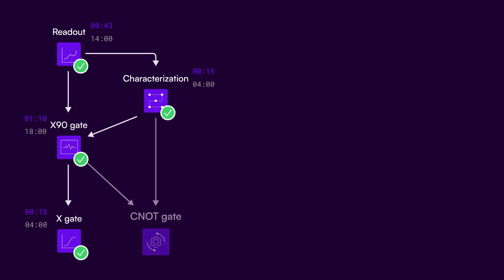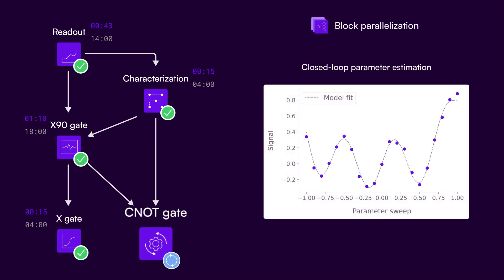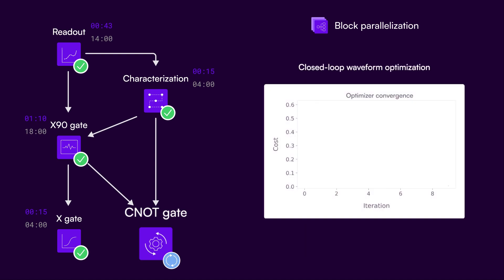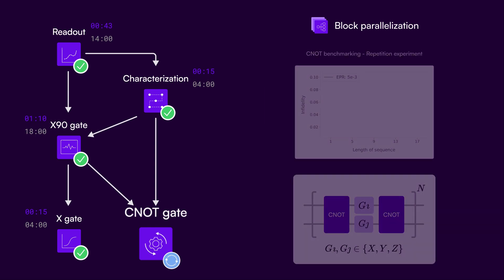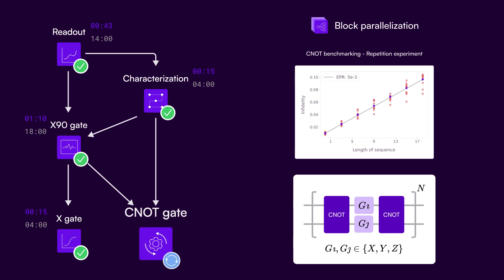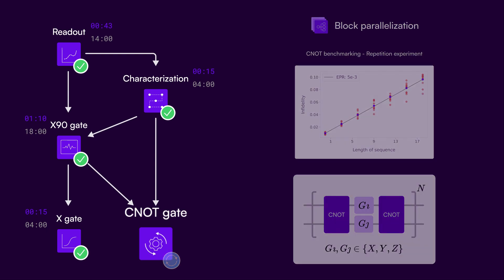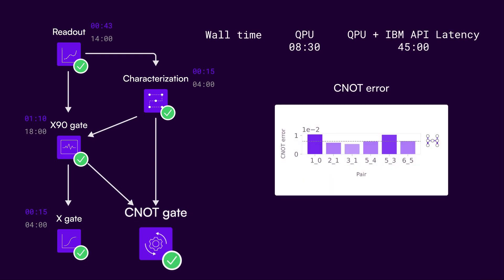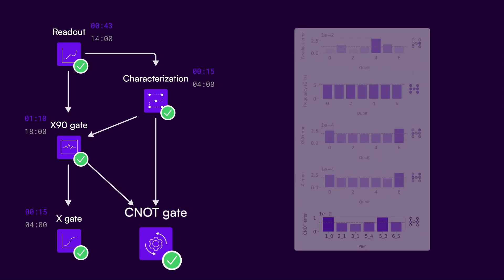Your toughest calibration challenge will typically be linked to tuning up multi-qubit gates. With the automated scheduler, it's easy to parallelize this task and achieve T1 limited CNOT gates across the entire device automatically. You can see an iterative process used for CNOT gate tune-up: first estimating the interaction parameters for each connected pair using model-based tomography, then using a closed-loop optimizer to tune gate waveforms to achieve maximum fidelity. A gate repetition experiment validates performance efficiently while ensuring you don't miss coherent errors. Parallelization is limited by device connectivity and executed in three parallel blocks, achieving T1 limited CNOT gates in only 8 minutes 30 seconds of QPU runtime, or 45 minutes total accounting for IBM API queuing latency.